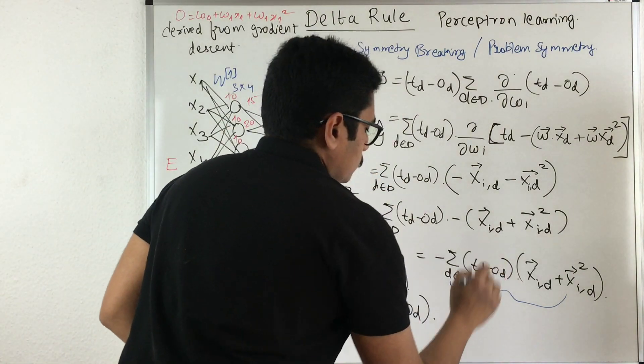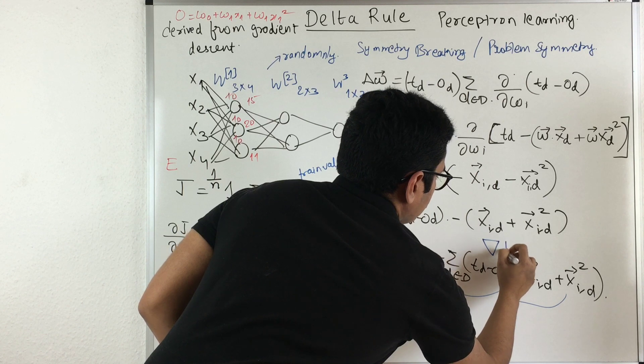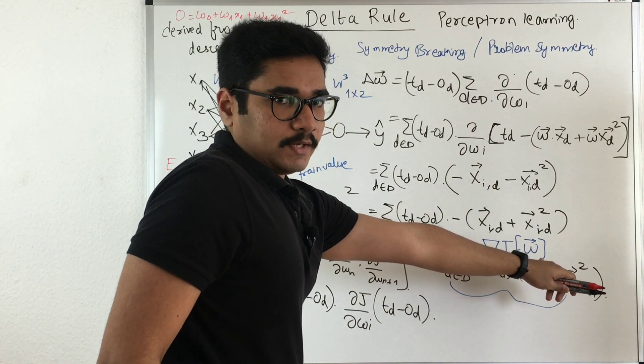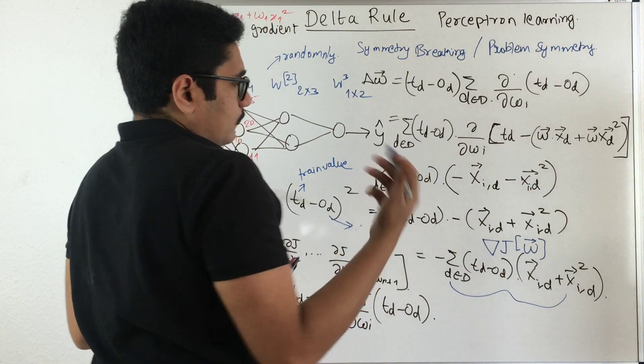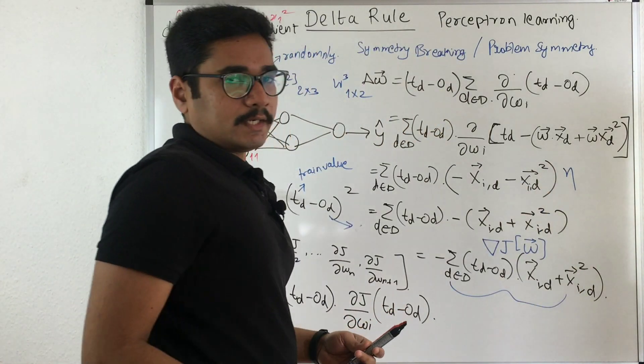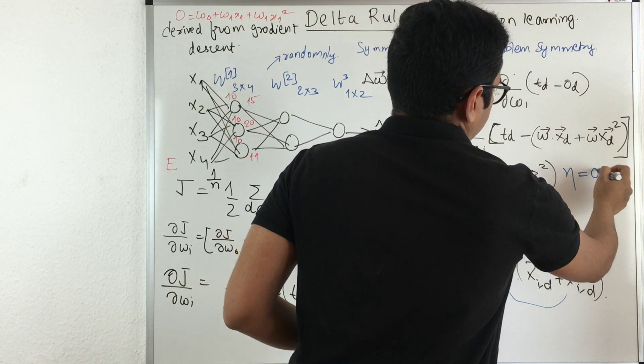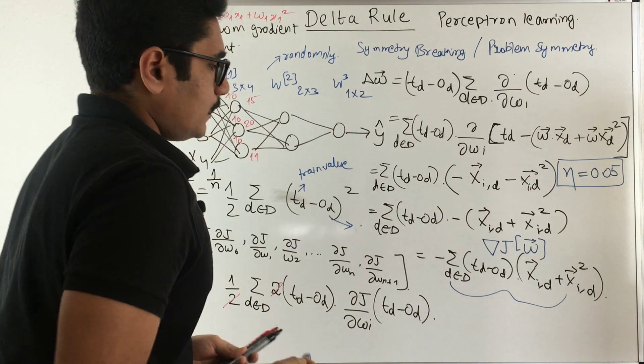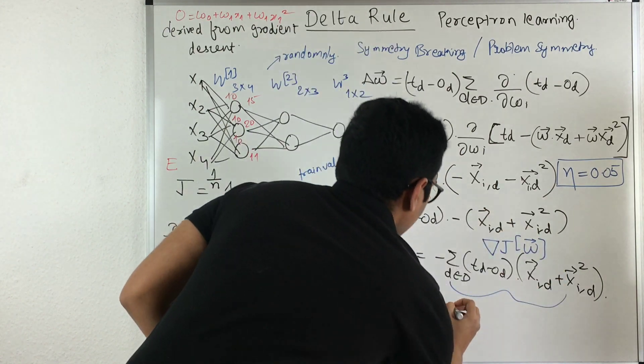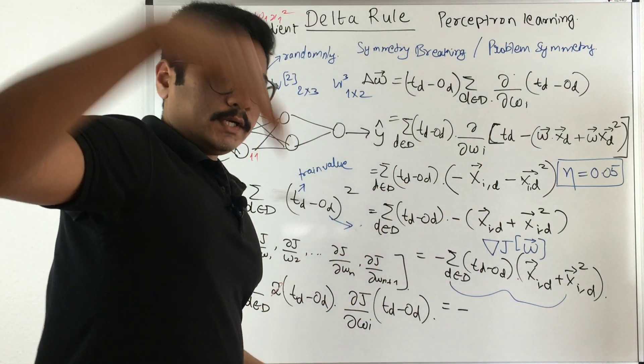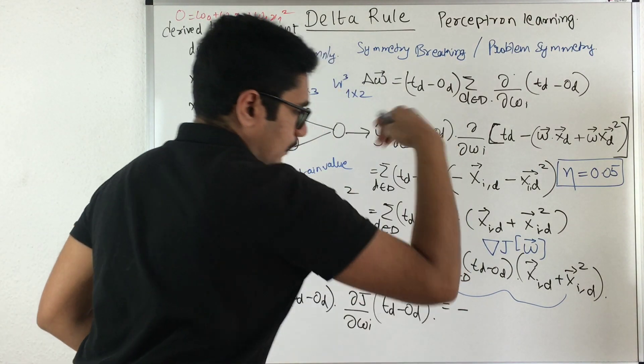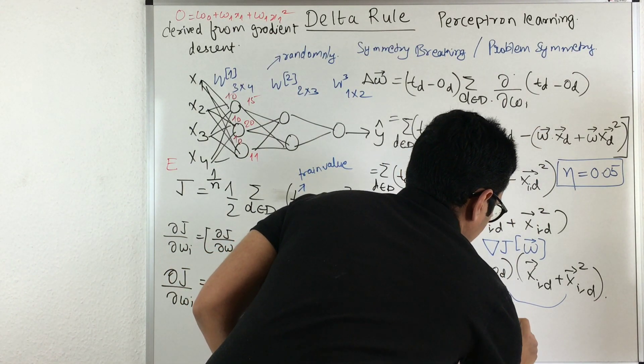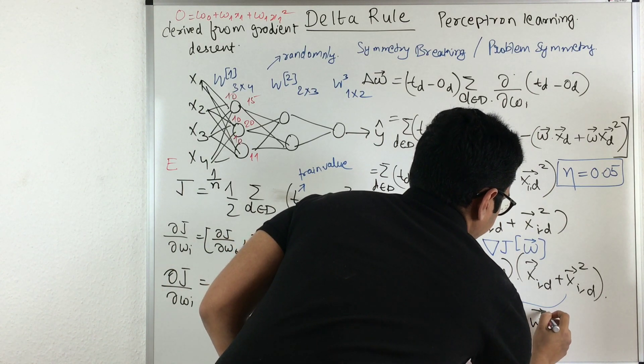So that becomes your error function. So let us call this as some delta J or del J with respect to some weight vector. So since you have differentiated with respect to weight, you have some this notation. So now whenever you do gradient descent, you know that is you have a learning rate or learning parameter that is eta. So let us say we have taken a small baby step of 0.05 error learning rate. So now what we can do is we can essentially represent this as negative. So that is going down the valley by taking small baby steps. That's why you have a negative sign. And then you have this learning rate eta and then del J with the weight vector.